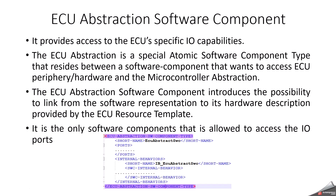ECU abstraction software component is the only component that can interact with IO (input/output). It provides services through provided ports that can be used by the sensor actuator software component. It is a special atomic software component type that resides between a software component wanting to access ECU peripherals and hardware, and the microcontroller abstraction layer. In the ARXML, it is identified by the tag ECU abstraction software component type, and you can design it using tools like SystemDesk or isolar. It also has ports, internal behavior.